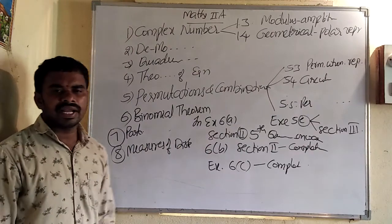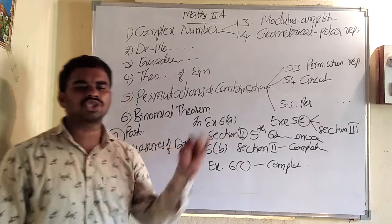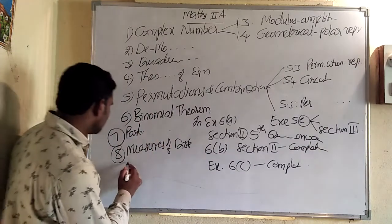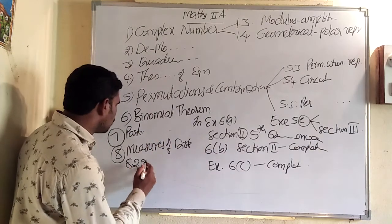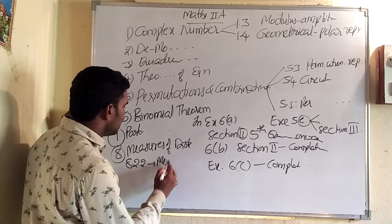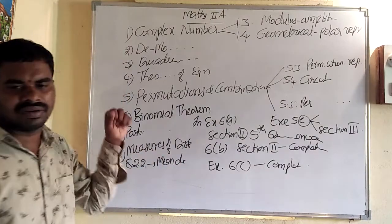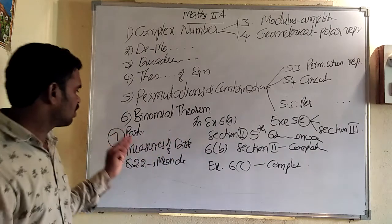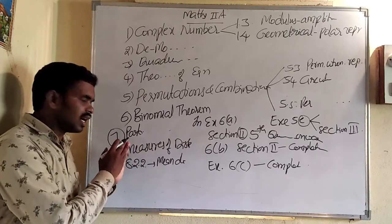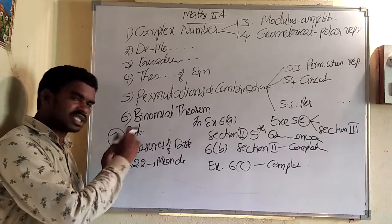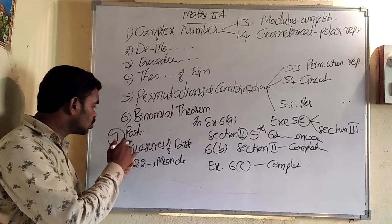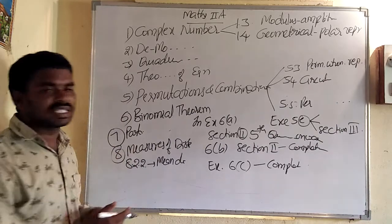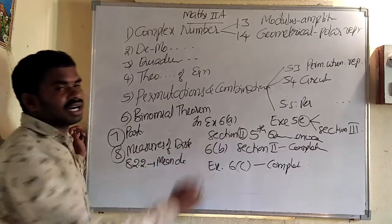In this Measures of Dispersion, 8.2.2 concept, that is mean deviation for group data onwards is removed. Just 8.1 is there, and 8.2.1 up to, so the syllabus is there. 8.2.2 onwards, there is no syllabus.